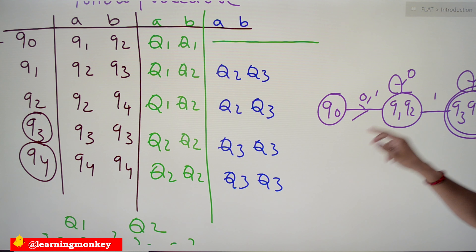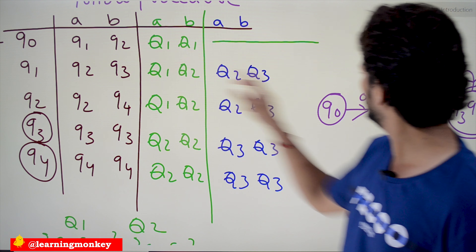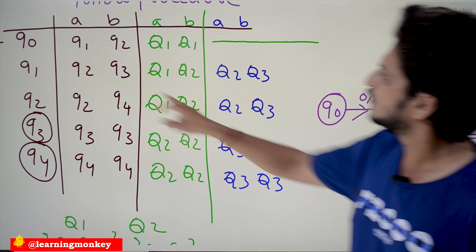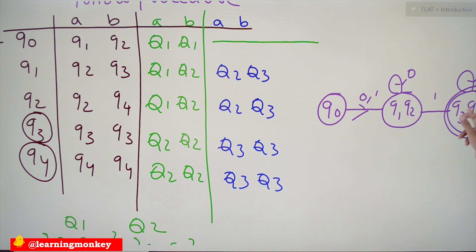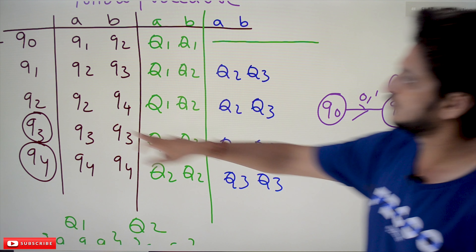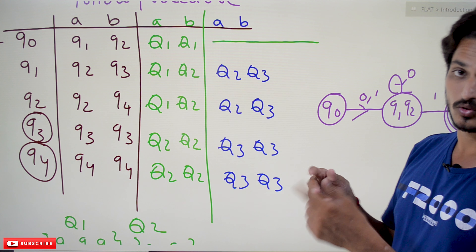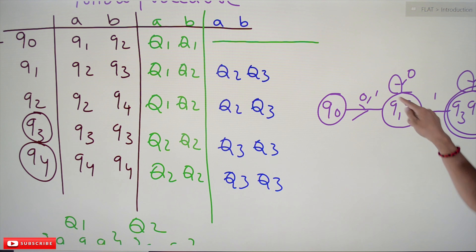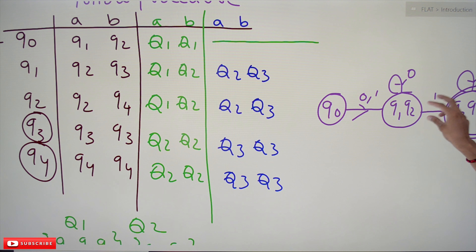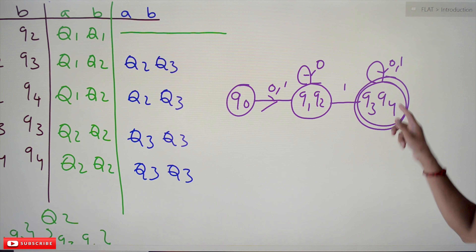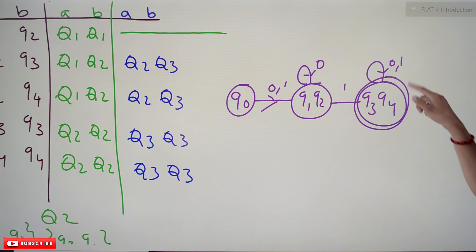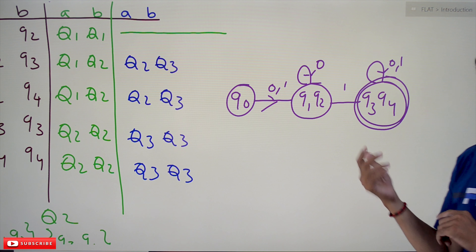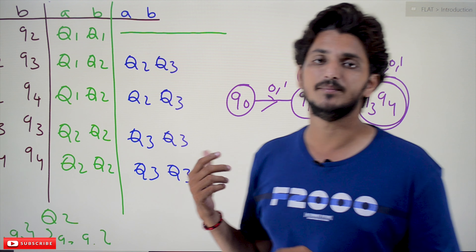Continuing the transitions: Q1 applying B goes to Q3, which is in the final state set {Q3, Q4}. Q2 also goes to the same sets. So on applying A we stay in the {Q1, Q2} state, and on applying B we move to the final state {Q3, Q4}. Similarly, the final state {Q3, Q4} on applying A or B also goes to the same sets. This is our minimized DFA after applying the minimization process.